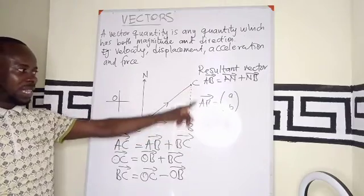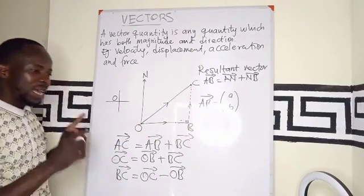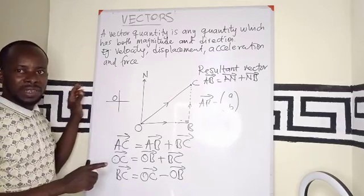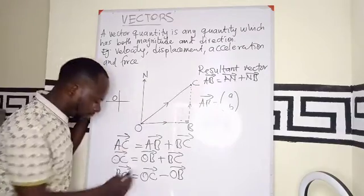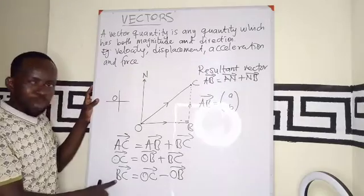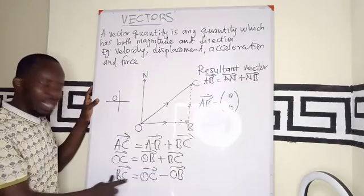The position vector of BC is just the end point, which is OC. This is the initial point, this is the end point, the beginning and the end.